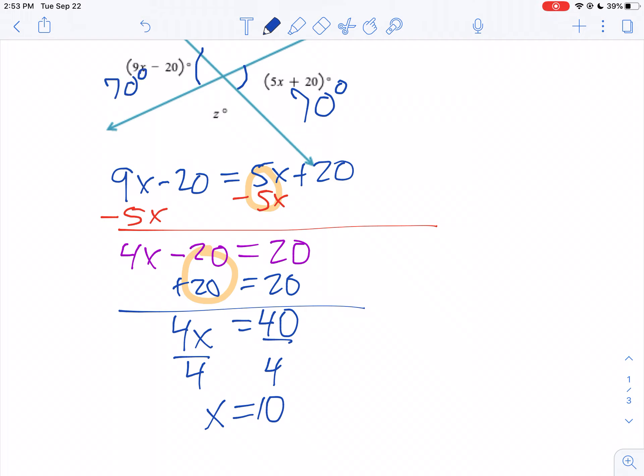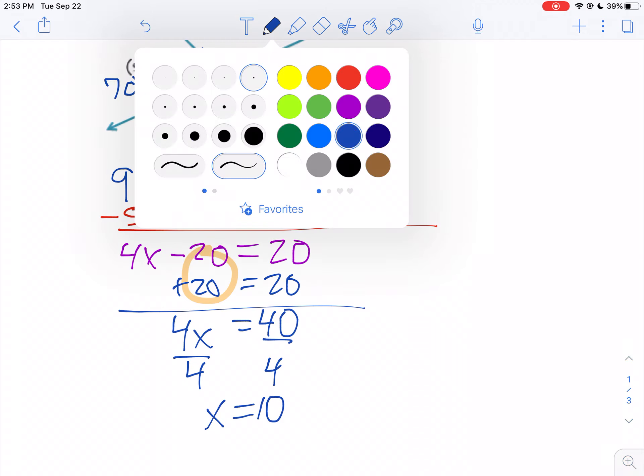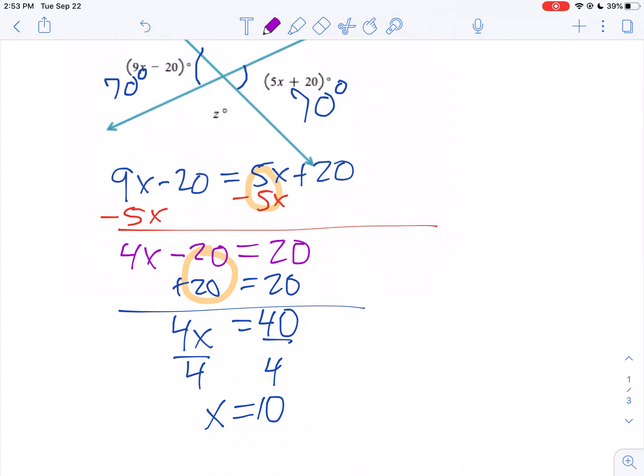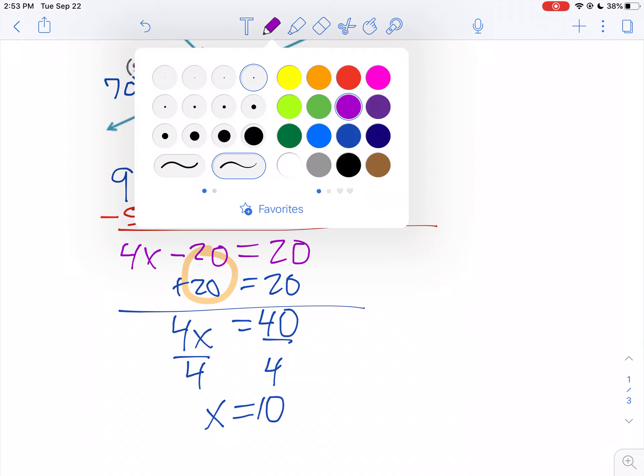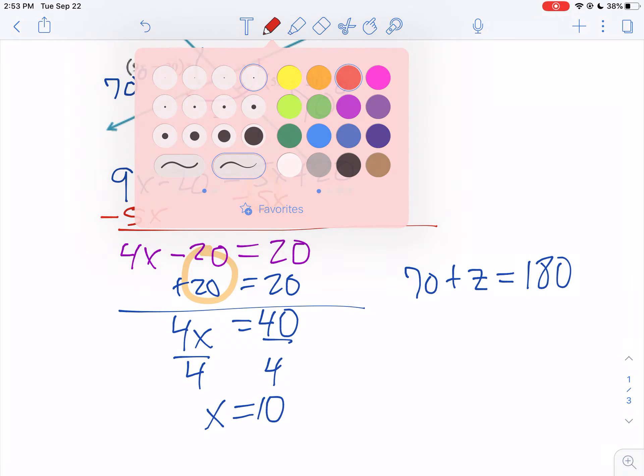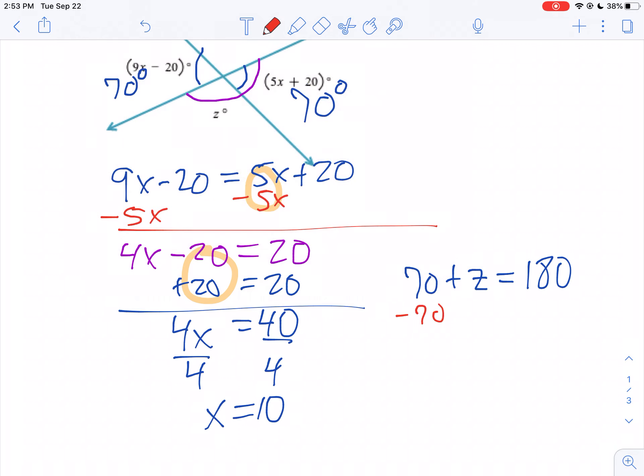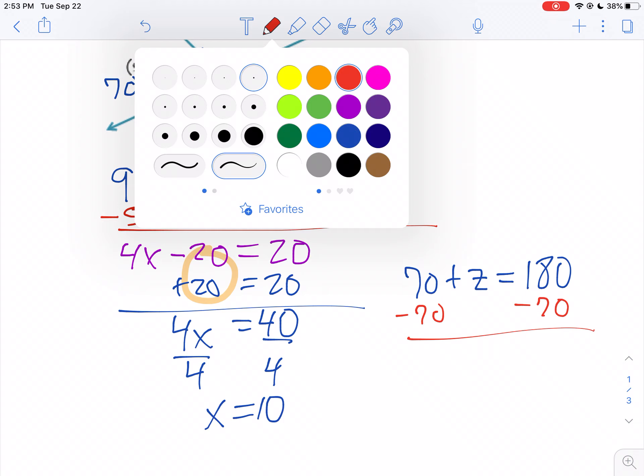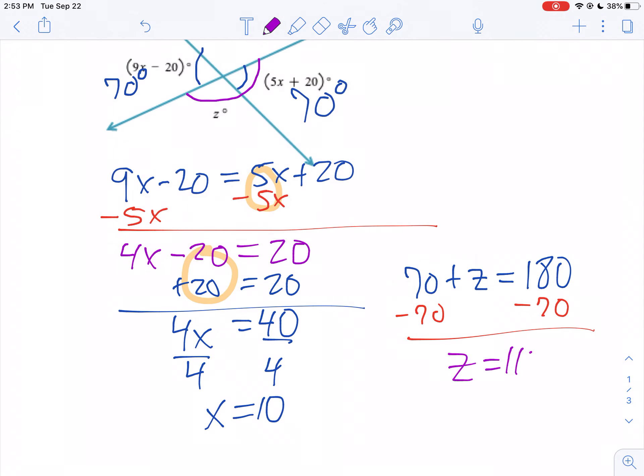And what you should notice is that the angle with an X and the angle with a Z are a linear pair. They add to 180 degrees. So we could say 70 plus Z equals 180. If you minus 70 from both sides, you get Z is 110 degrees.